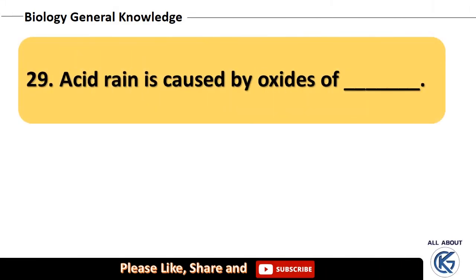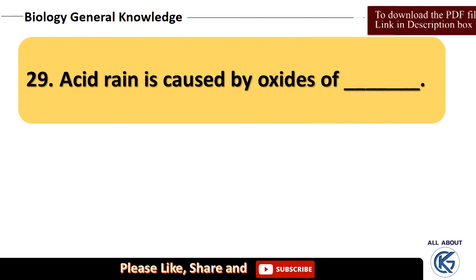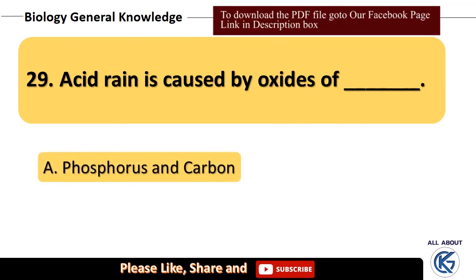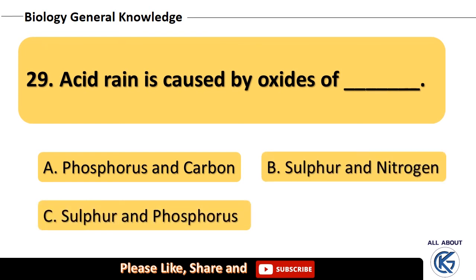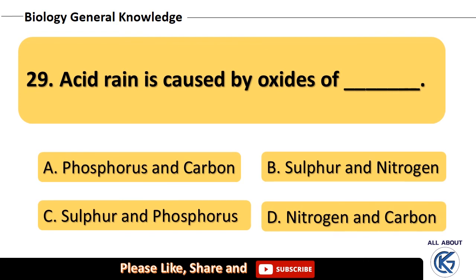Acid rain is caused by oxides of — phosphorus and carbon, sulfur and nitrogen, sulfur and phosphorus, or nitrogen and carbon? The right answer is sulfur and nitrogen.